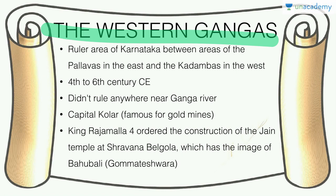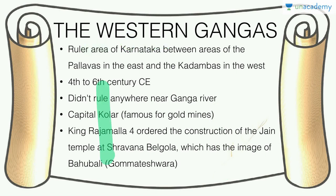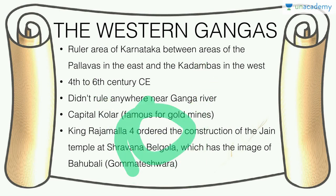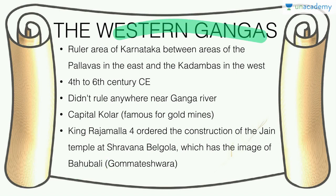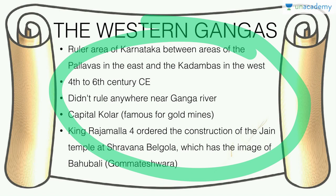The Western Gangas — not to be confused with the Eastern Gangas or the Ganga river plains — ruled the area of Karnataka between the Pallavas in the east and the Kadambas in the west, from the 4th to 6th century CE. Their capital was Kolar, site of a famous gold mine. One of their kings, Rajamalla IV, ordered the construction of the Jain temple at Shravana Belgola — the famous image of Bahubali or Gomateshwara. These are art and culture connections you can study further.